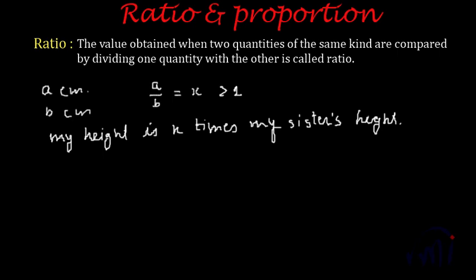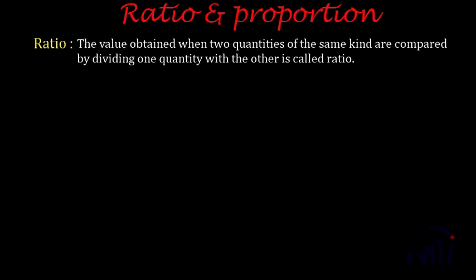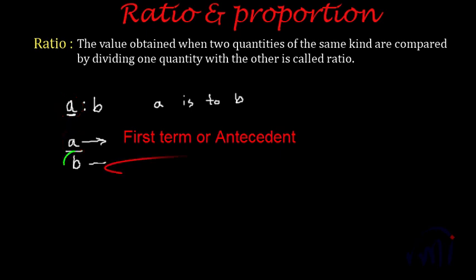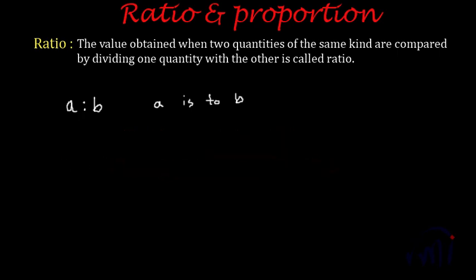There are a few basic things to know about ratios. If you are comparing two quantities a and b, the ratio of a to b is written as a:b (using a colon) and read as 'a is to b.' It can also be written as the fraction a/b and treated as a fraction for calculations. The first term is called the antecedent, and the second term is called the consequent.